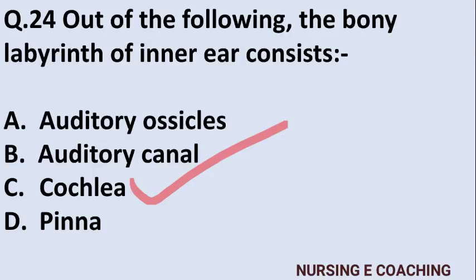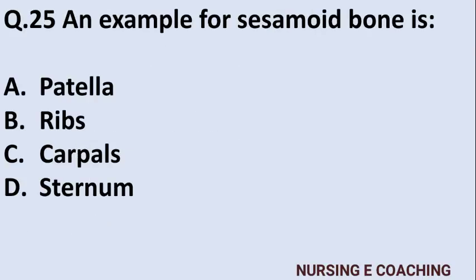Question 25, the last question of this video: An example of a sesamoid bone is — Option A: patella, Option B: ribs, Option C: carpals, Option D: sternum. Answer is A — patella. The patella is classified as a sesamoid bone.